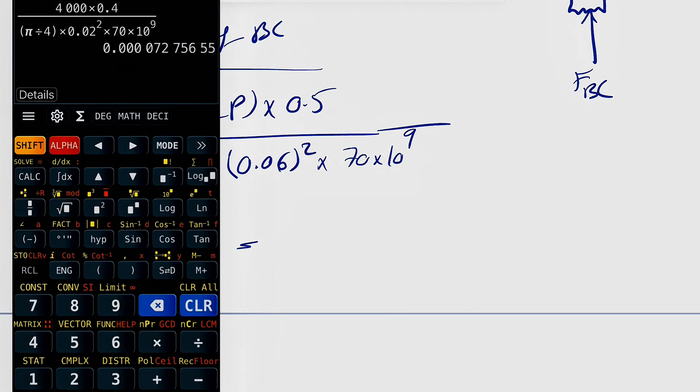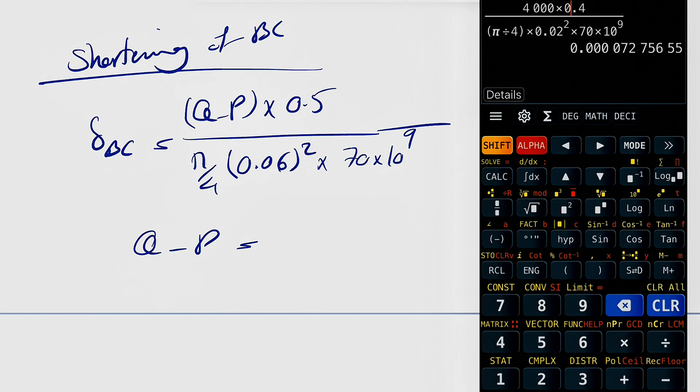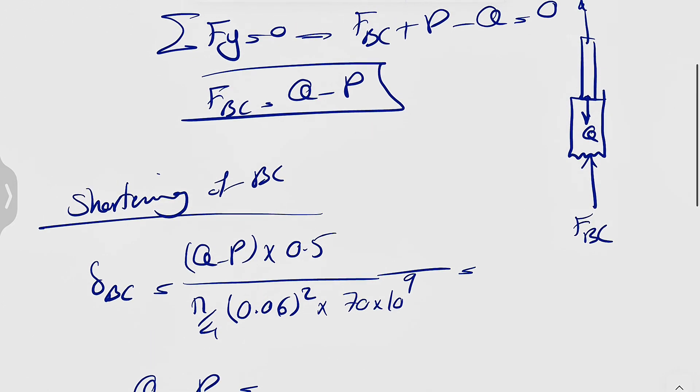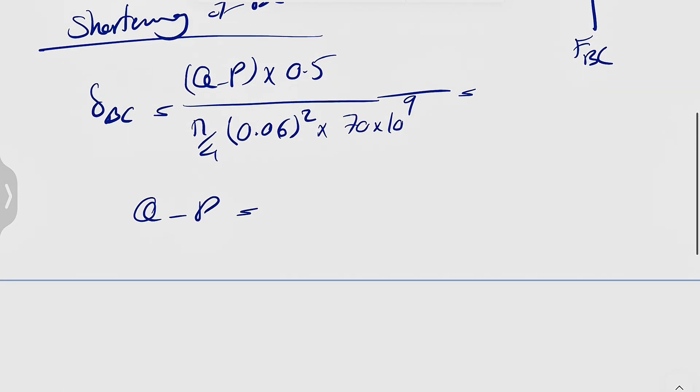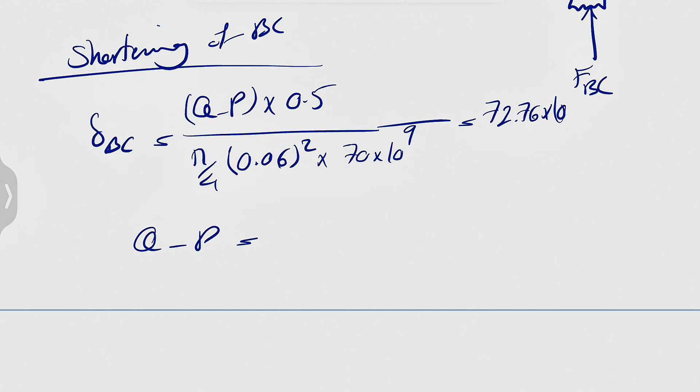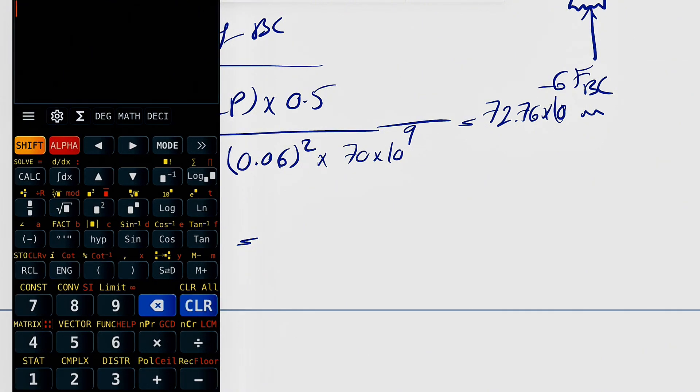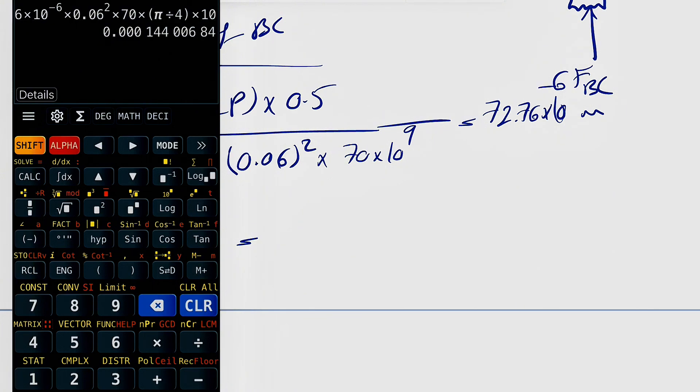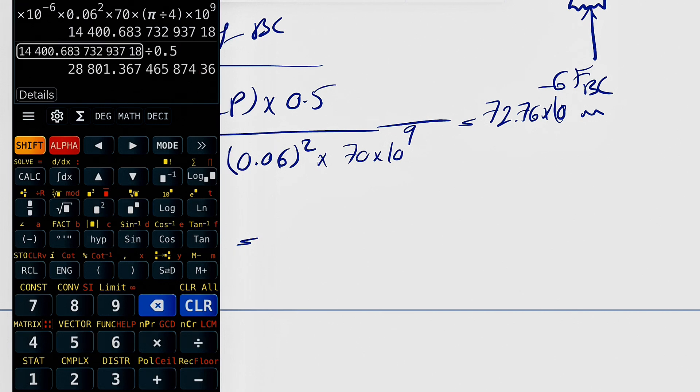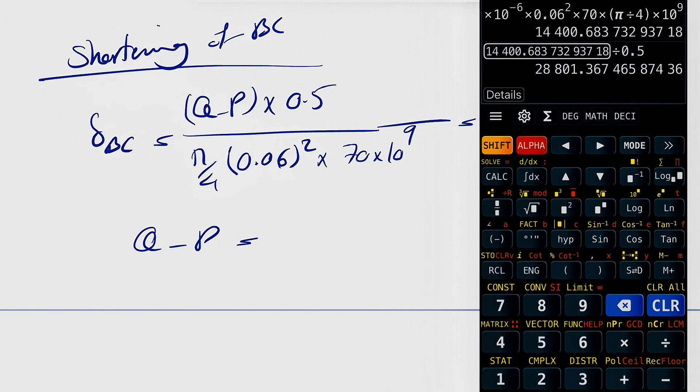From here we can find Q minus P. Let's see what we get. Obviously this will equal what we found in the previous part. As I mentioned, in order to have zero deflection at A, these two have to equal each other, so this is actually equal to 72.76 times 10 to the minus 6 meters again. Let's calculate this. 72.76 times 10 to the minus 6 times 0.06 squared times pi divided by 4, and we have 10 to the 9. Divide this by 0.5.